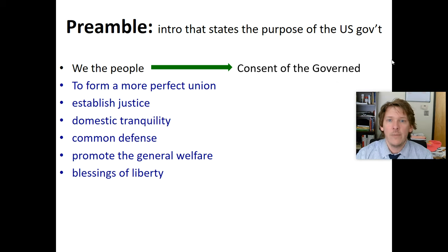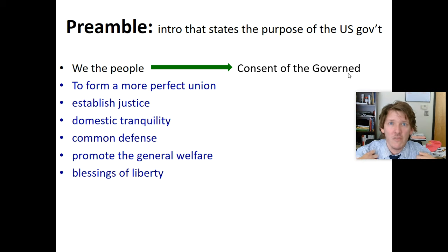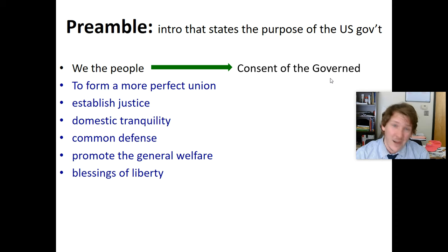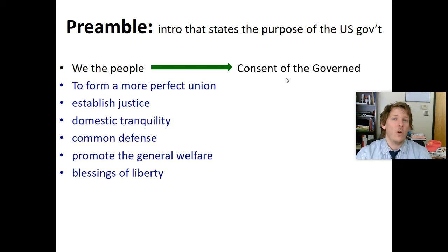Consent means permission. We, the people, are giving permission to the government — permission to make rules, make laws, enforce the laws, and decide if people have broken the laws. We're giving it to them. The governed — that's us, the people being told what to do. We are allowing them to tell us what to do sometimes. The governed are giving consent, giving permission, allowing them to have the power. We are forfeiting our power and giving it away to them. They have our permission to do that.